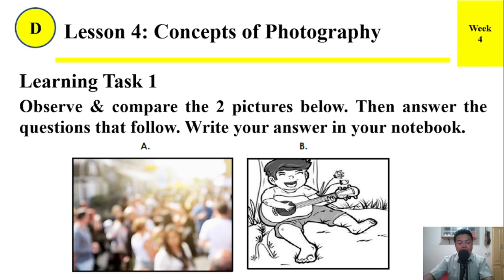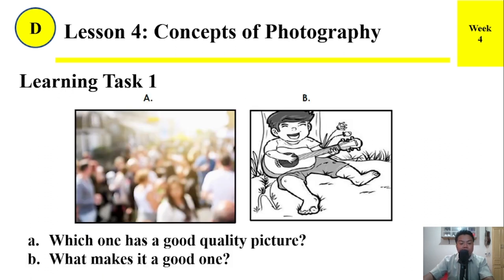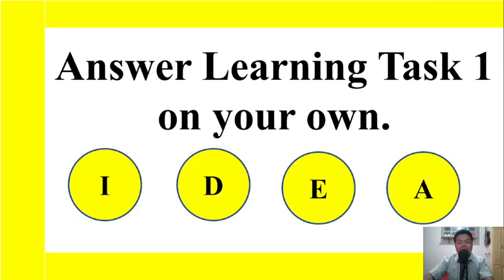Learning Task Number One: Observe and compare the two pictures below, then answer the questions that follow. Write your answer in your notebook. We have Picture A and Picture B. A) Which one has a good quality picture? B) What makes it a good one? Answer Learning Task One on your own.